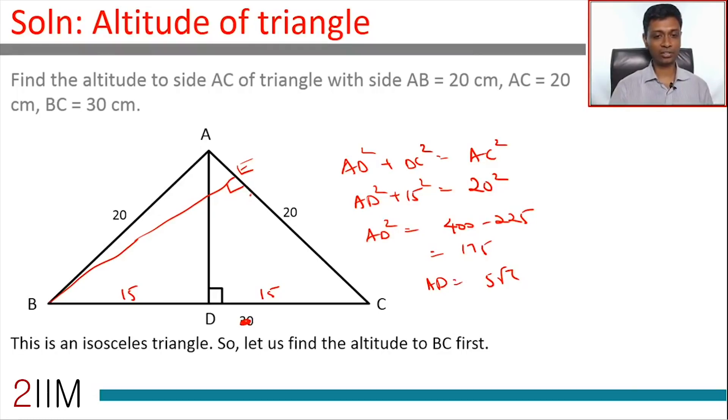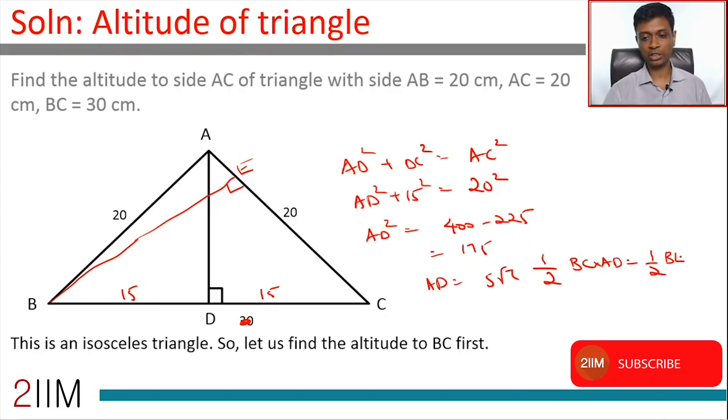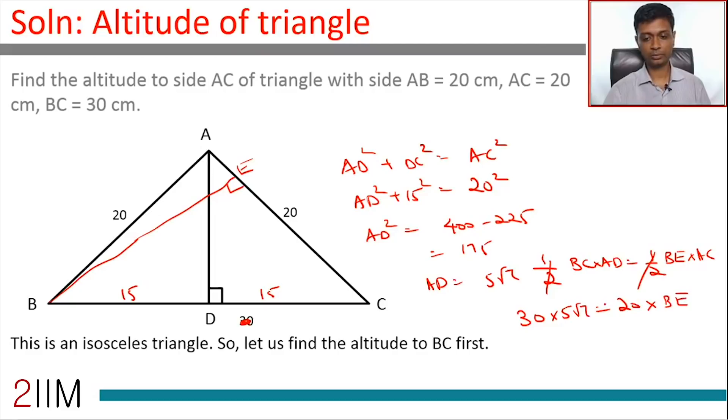Equate the areas. Plain and simple. Area same. Half into BC into AD should be equal to half into BE into AC. Or 30 into 5√7 equals 20 into BE, or BE equals 5√7 into 3 by 2.